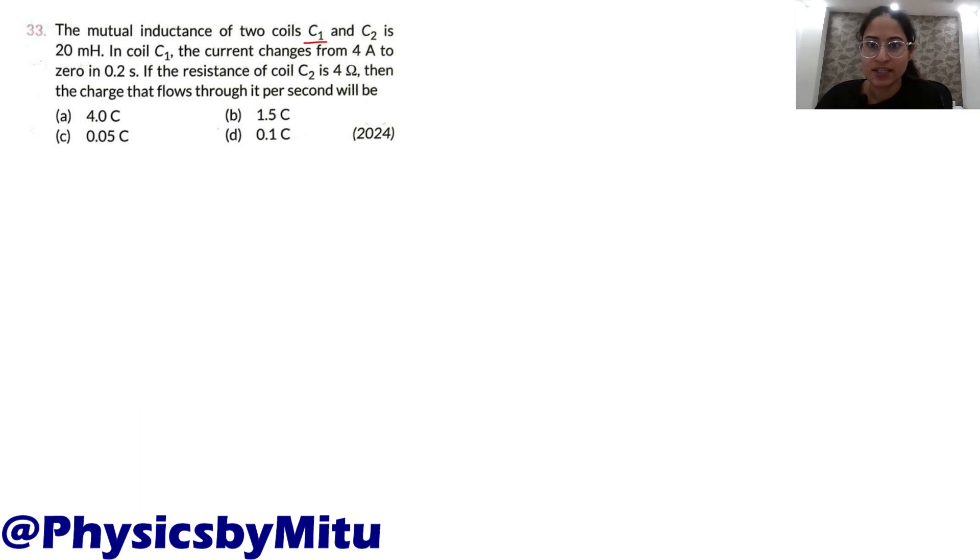The mutual inductance of two coils C1 and C2 is 20 millihenry. In coil C1, the current changes from 4 ampere to 0 in 0.2 seconds. If the resistance of coil 2 is 4 ohm, then the charge that flows through it per second will be...